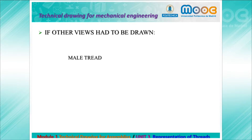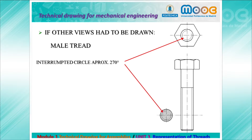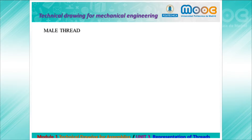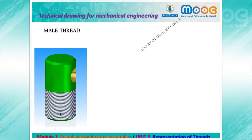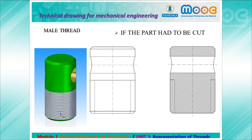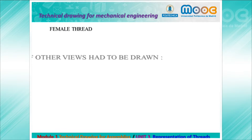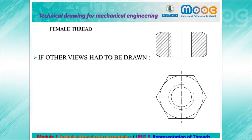In other views, we can draw threads differently. For example, in a male thread, if we have a section or a bottom view, you observe an interrupted circle at approximately 270 degrees. In the female thread, if we draw the top view, we similarly see a circle interrupted at approximately 270 degrees.